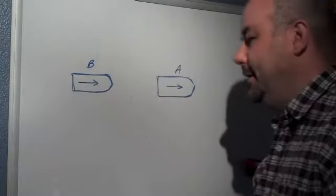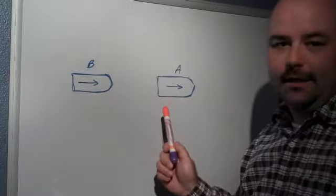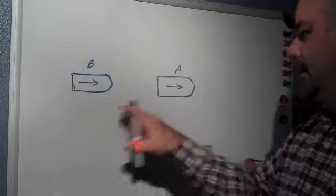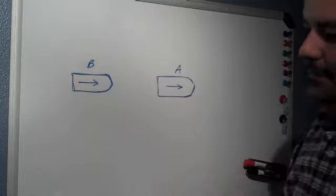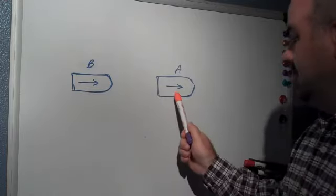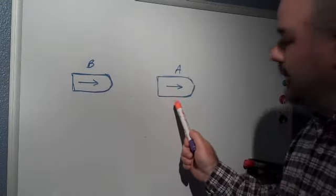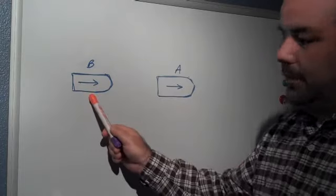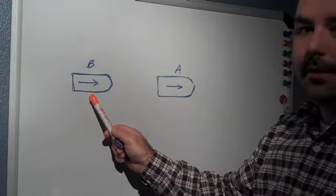All right, this one happens all the time, and that is when we're trolling in a line. And we troll in a line a lot. We get behind a boat and try to stay in a path with them. But what happens sometimes is the lead boat, in this case boat A, we'll call boat A, is trolling at a slower speed than a boat coming up from behind, which we'll call boat B.